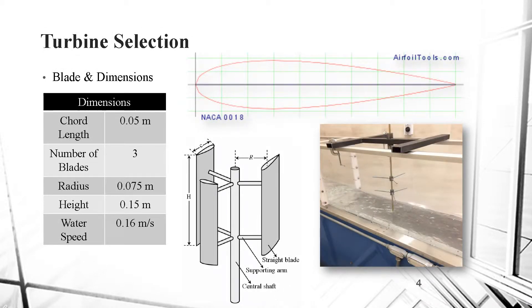Turbine selection. The first step done in our project is the turbine selection, that is, the blade and dimensions of the turbine. The blade that we chose is a NACA 0018 symmetrical airfoil. We chose a 3 bladed turbine with a small radius of 7.5 cm to fit in the water channel that we're supposed to use for testing. The chord length is 5 cm, and the water speed imitating the wind is 0.16 m per second.